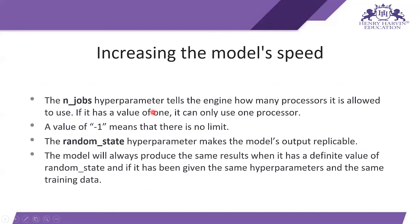For increasing model speed, the n_jobs hyperparameter tells the engine how many processors it is allowed to use. If it has a value of 1, it can only use one processor. A value of minus 1 means there is no limit — your CPU can use all of its cores, whether it has 4, 8, or n number of cores. So n_jobs equals 1 uses one core, and minus 1 uses all available processor power.